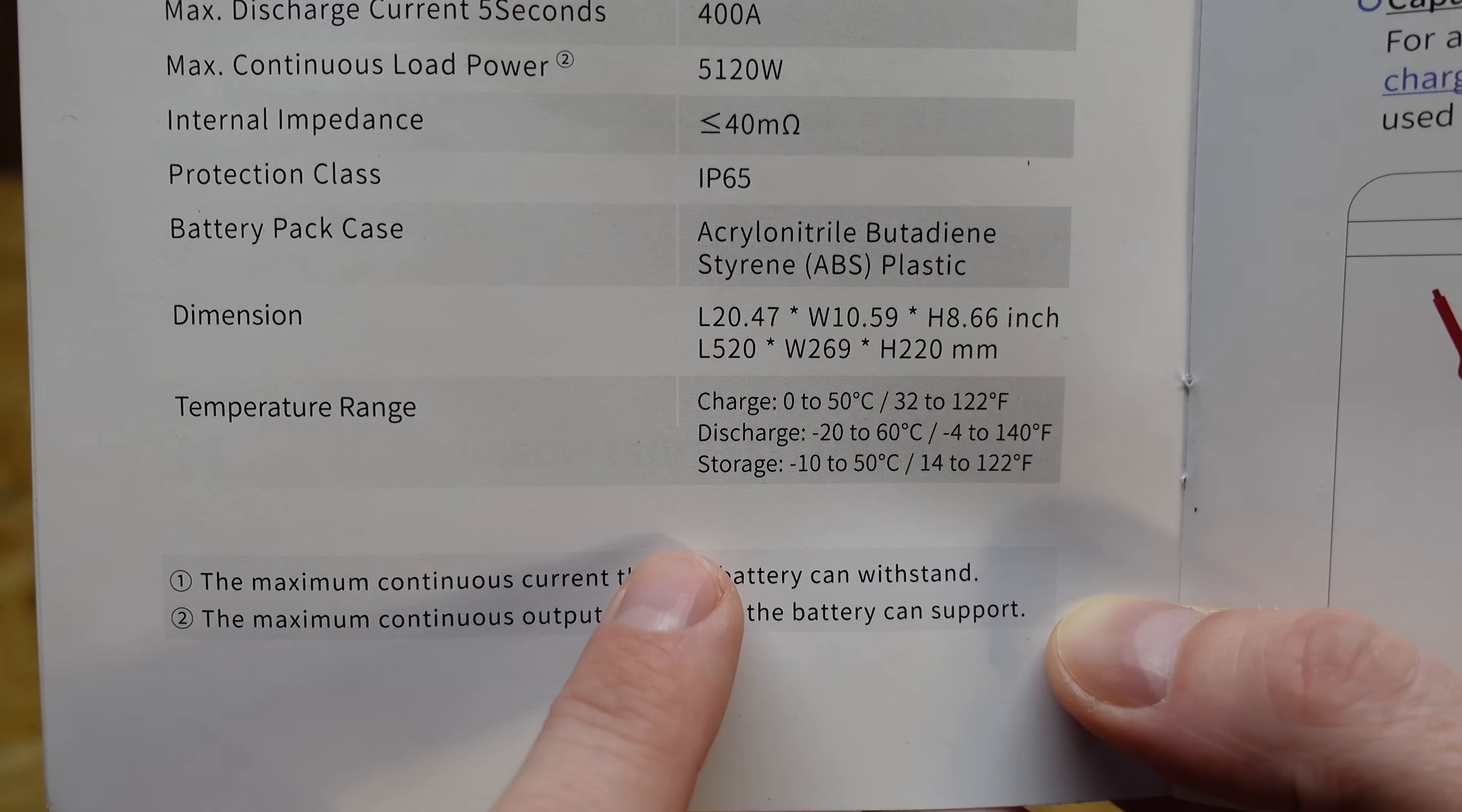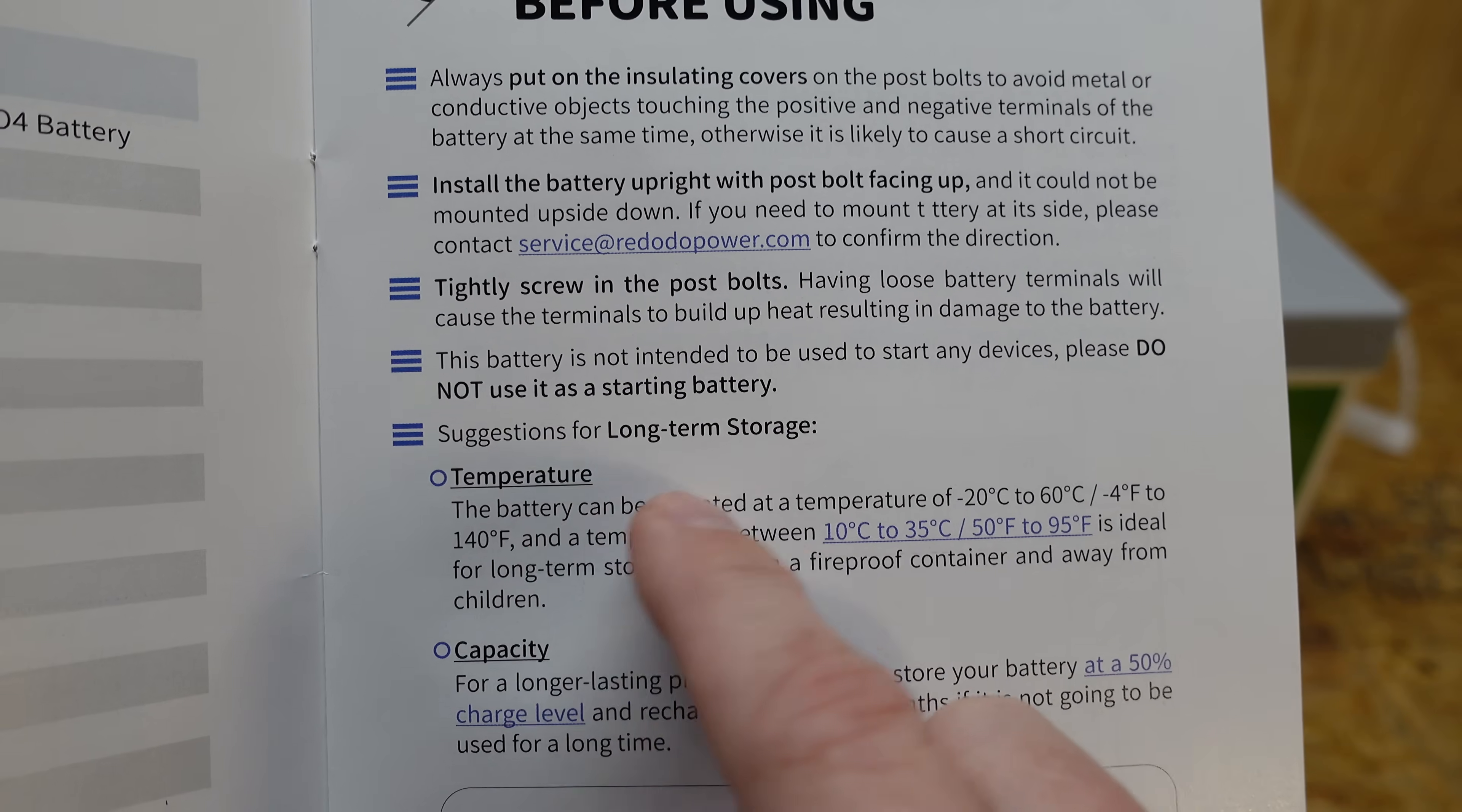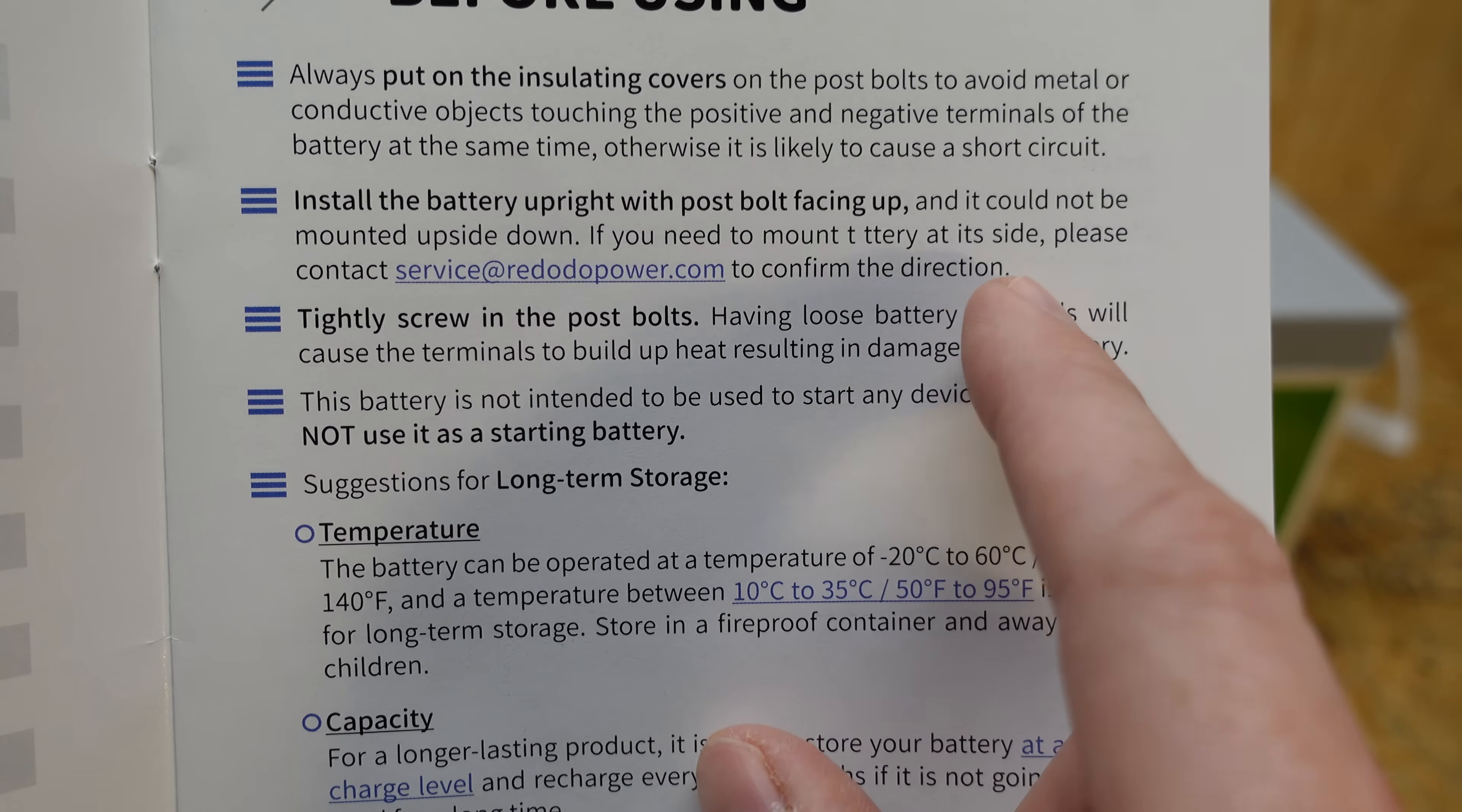This battery does not advertise having low temperature protection, and their 100 amp hour that I reviewed previously did not, so I'm not expecting it to. Slight inconsistency I did notice is it does say the battery needs to be upright with the bolts facing up, then it says not to mount it upside down, and then it says to ask them if you're going to mount it on the side.